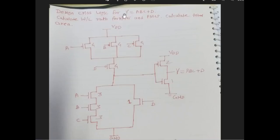Today we will discuss the calculation of W by L ratio for a given CMOS implementation. A boolean expression ABC plus D is given, and we have to implement this using CMOS logic. We also have to calculate the width-to-length ratio for NMOS and PMOS, and calculate the total area needed for that particular chip.